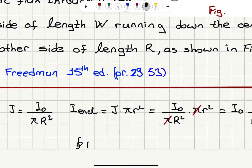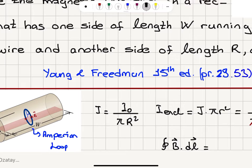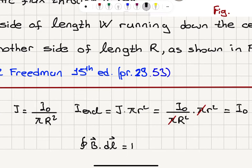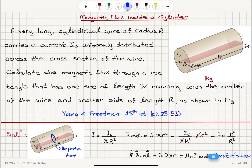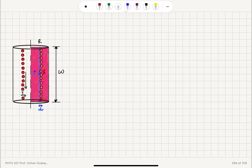Now I'm ready to write Ampere's law. The closed path integral of B dot dl equals, since the magnetic field is only a function of r and the dl's are in the direction of the magnetic field, it becomes B times the circumference 2 pi r. This equals the permeability of free space mu0 multiplied by the current enclosed — that's Ampere's law. Knowing the current enclosed and the path integral gives B times 2 pi r, so I can now calculate the magnetic field.